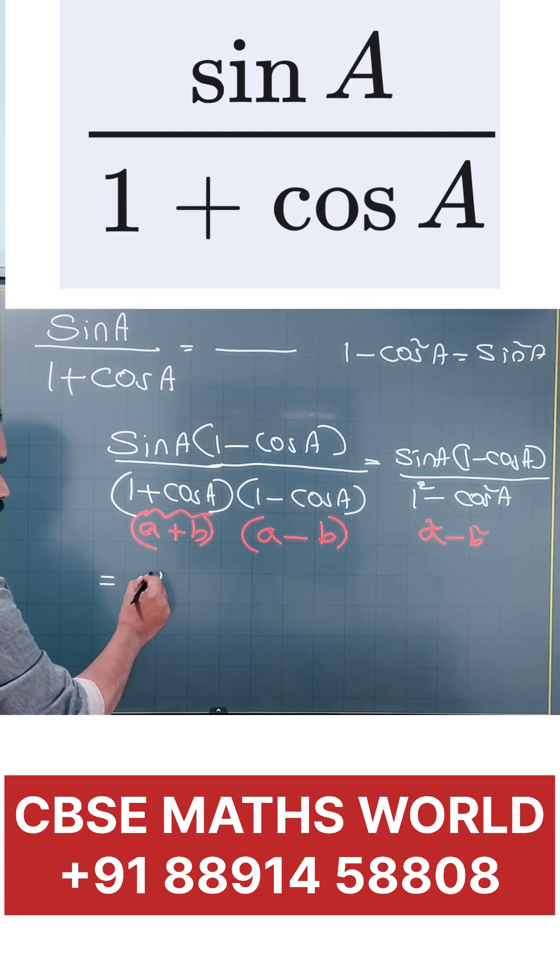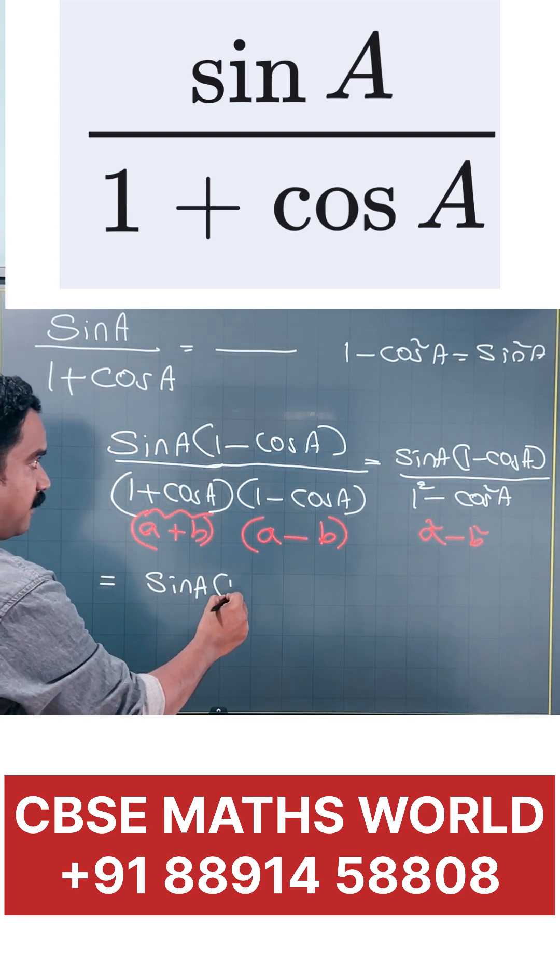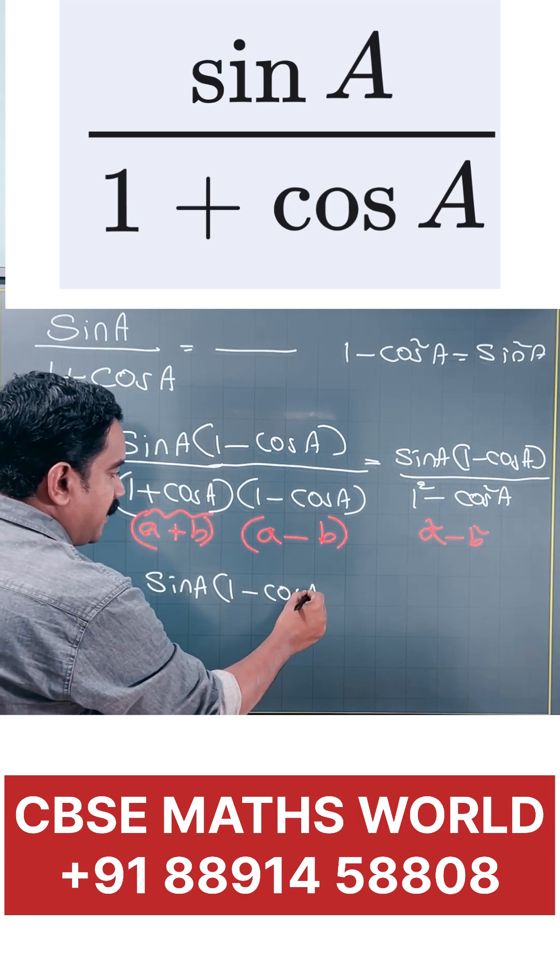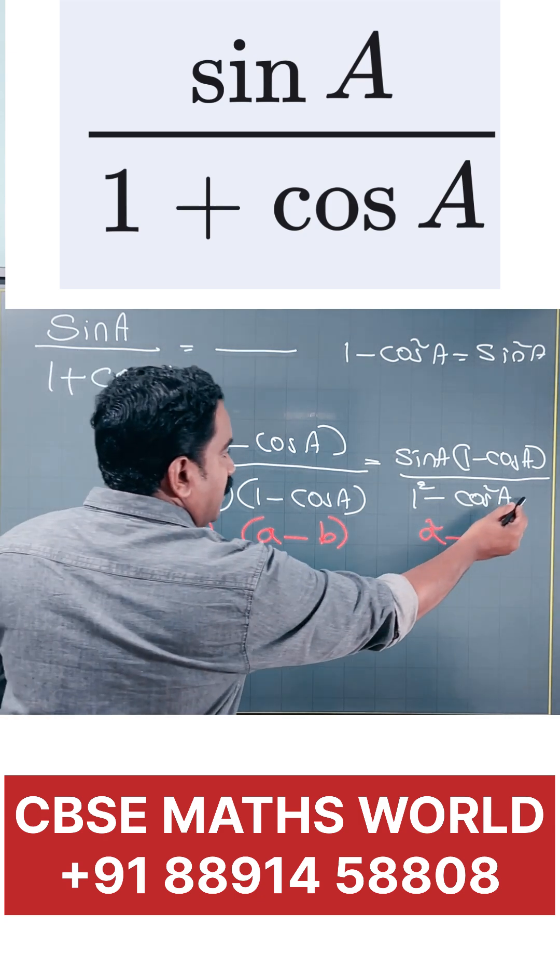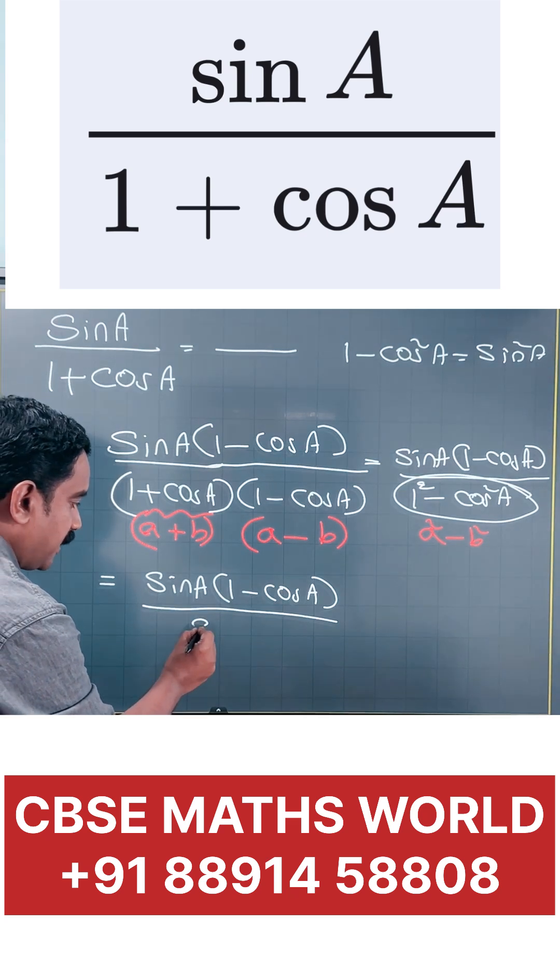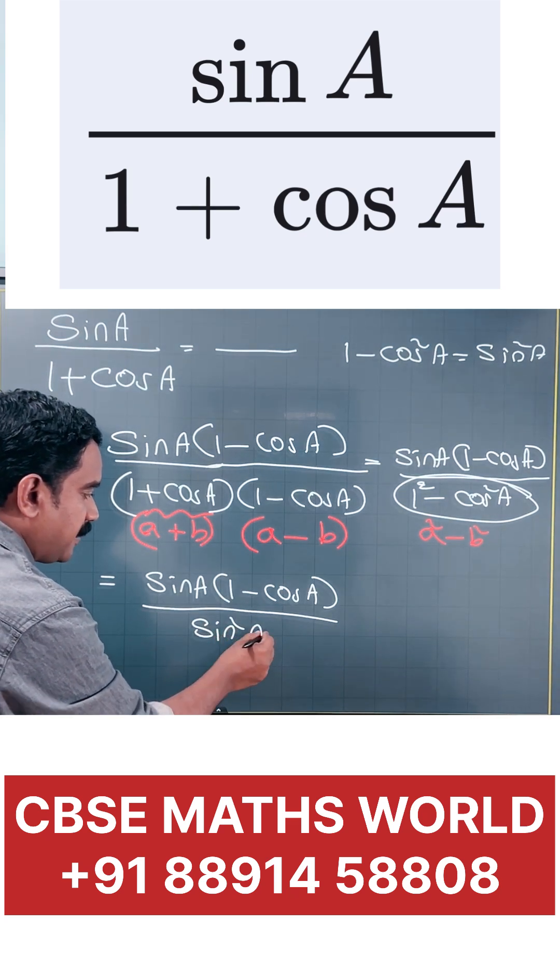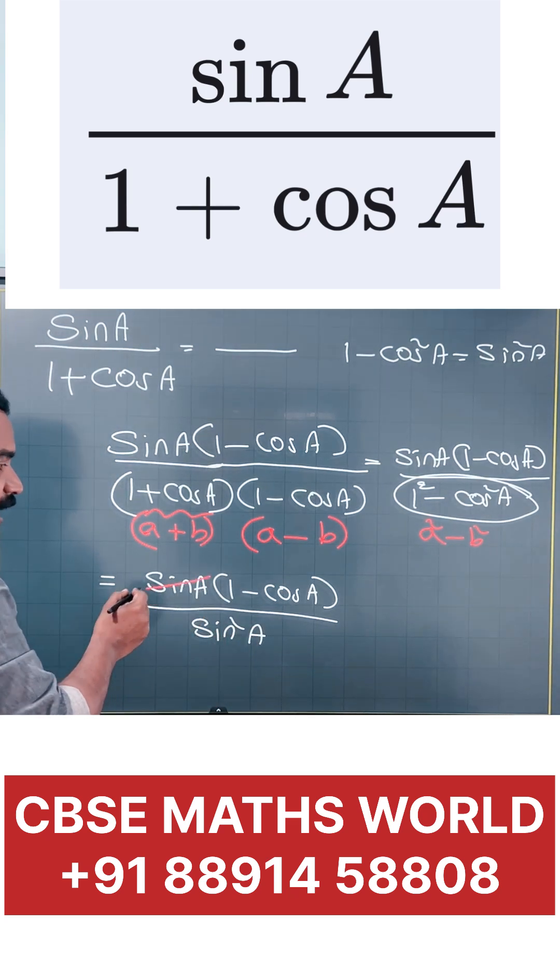Now, the numerator is sine A into 1 minus cos A and the denominator, this value, 1 minus cos square A equal to what? Sine square A. This is sine square A. Numerator 1 sine A and denominator 1 sine A can cancel.